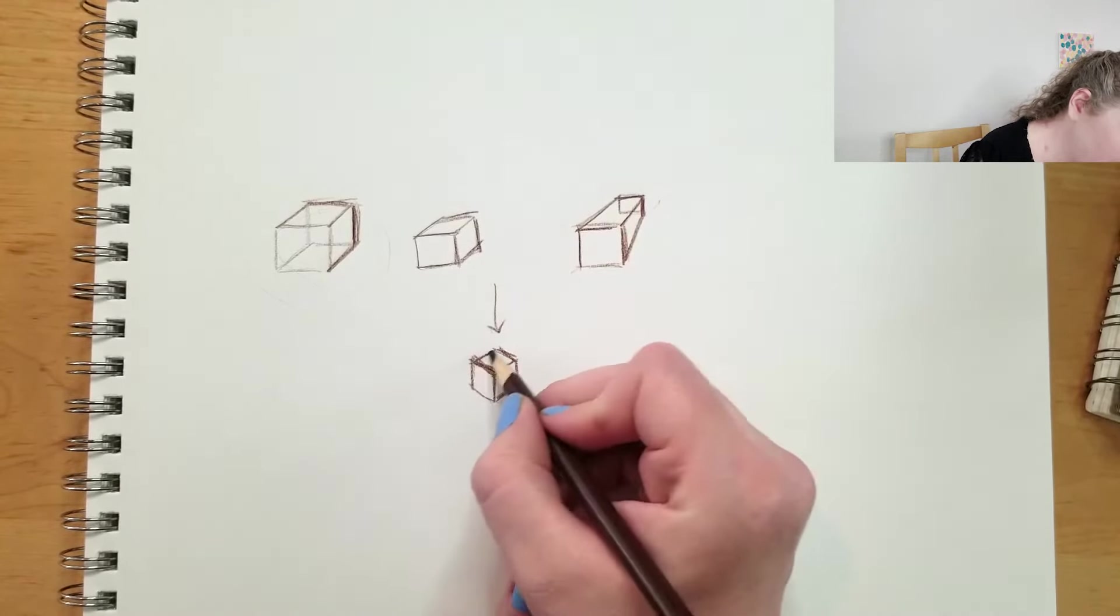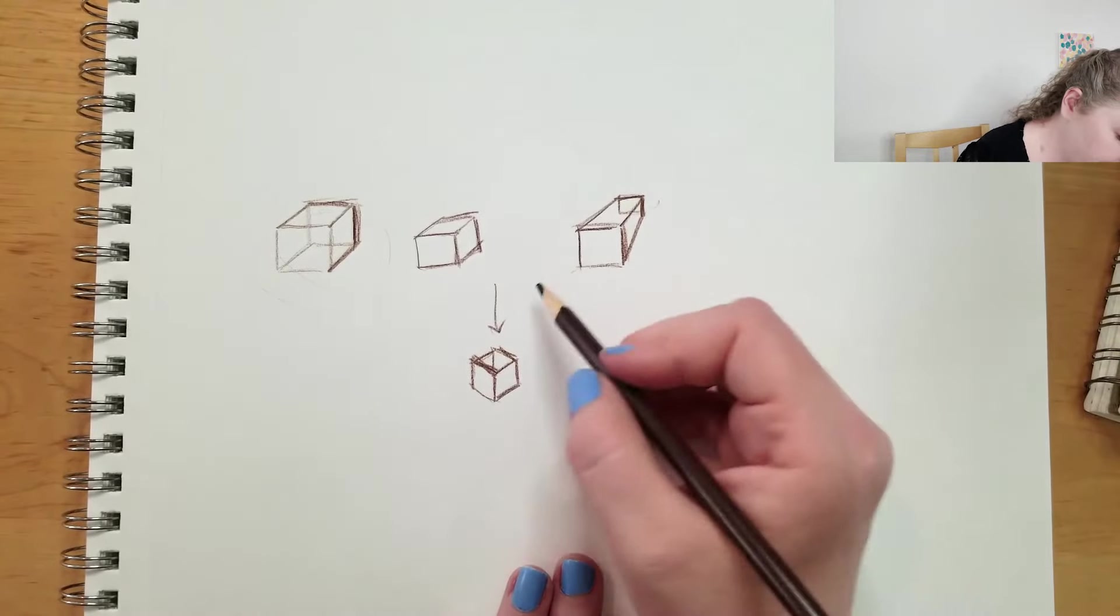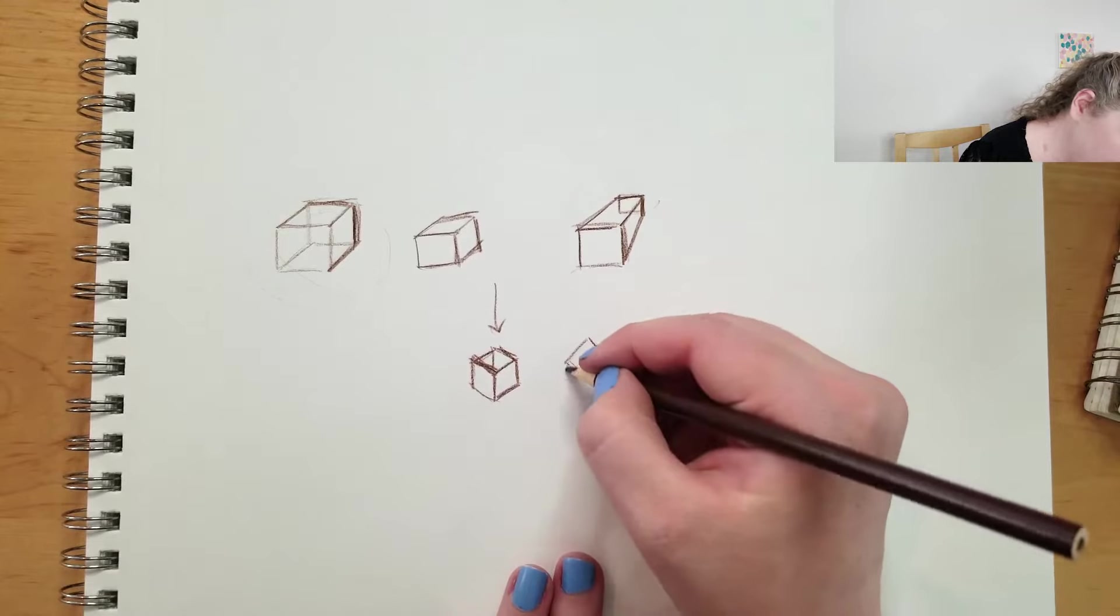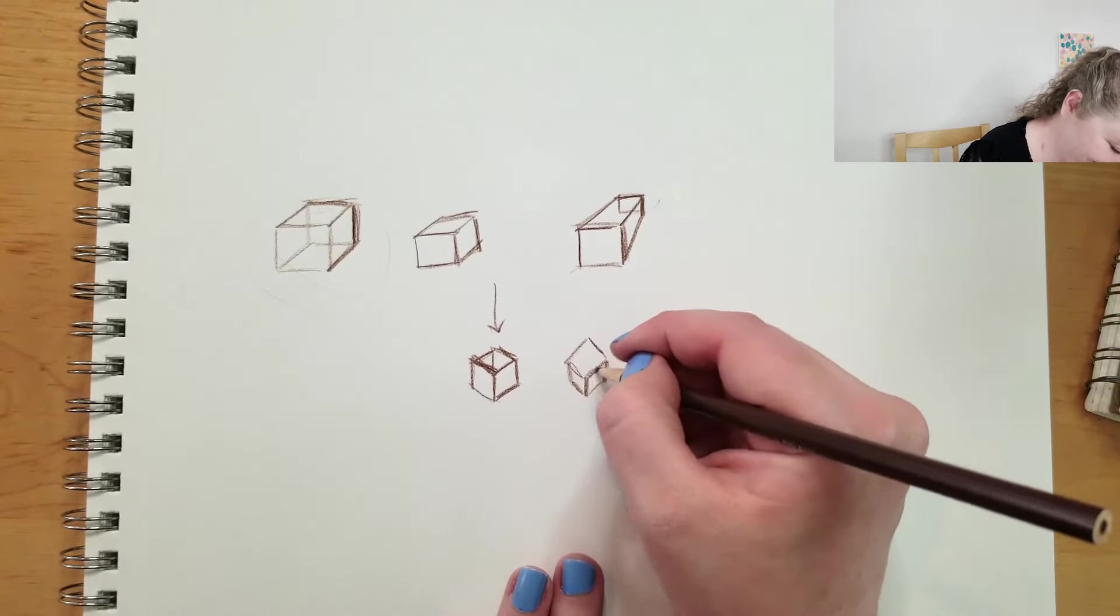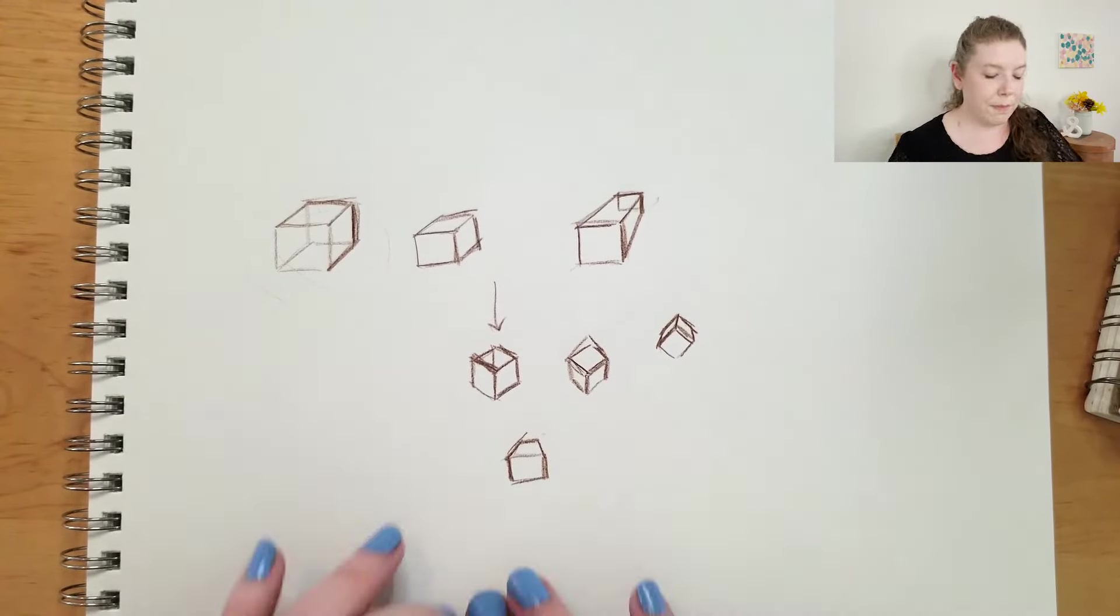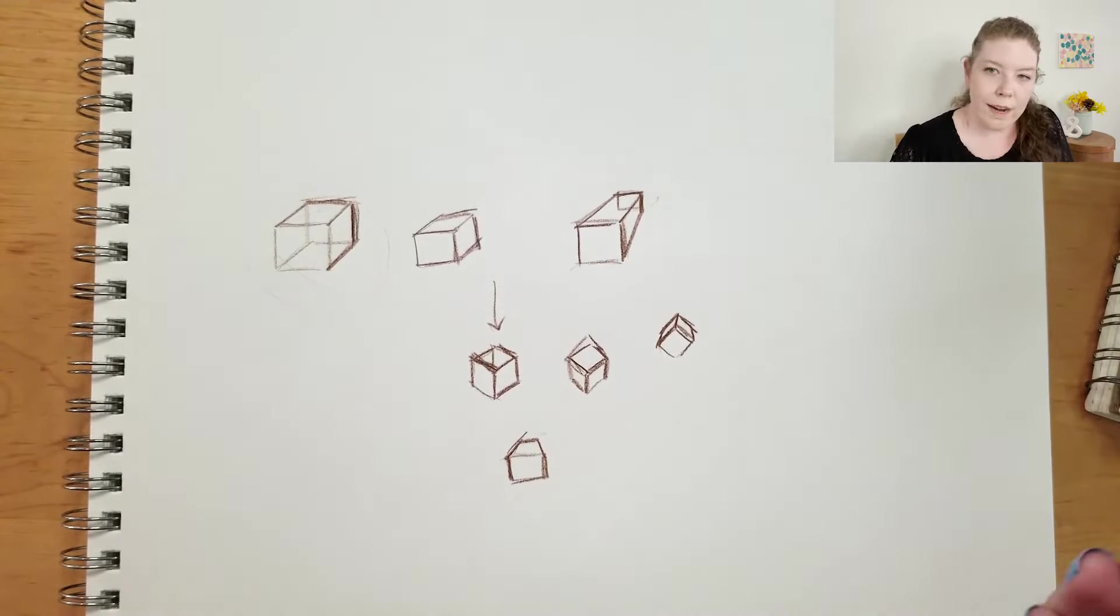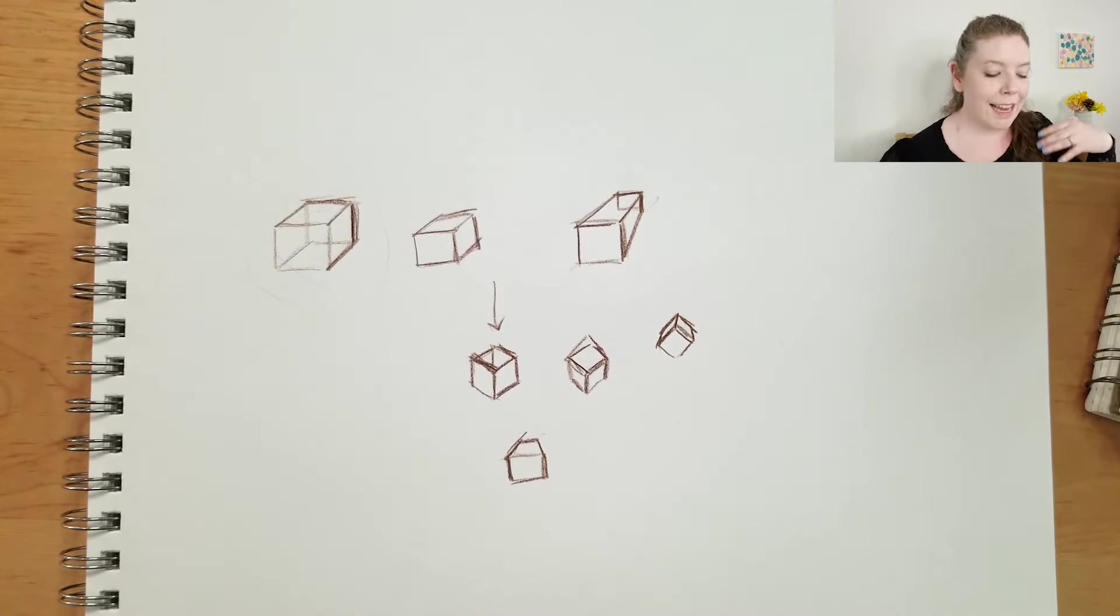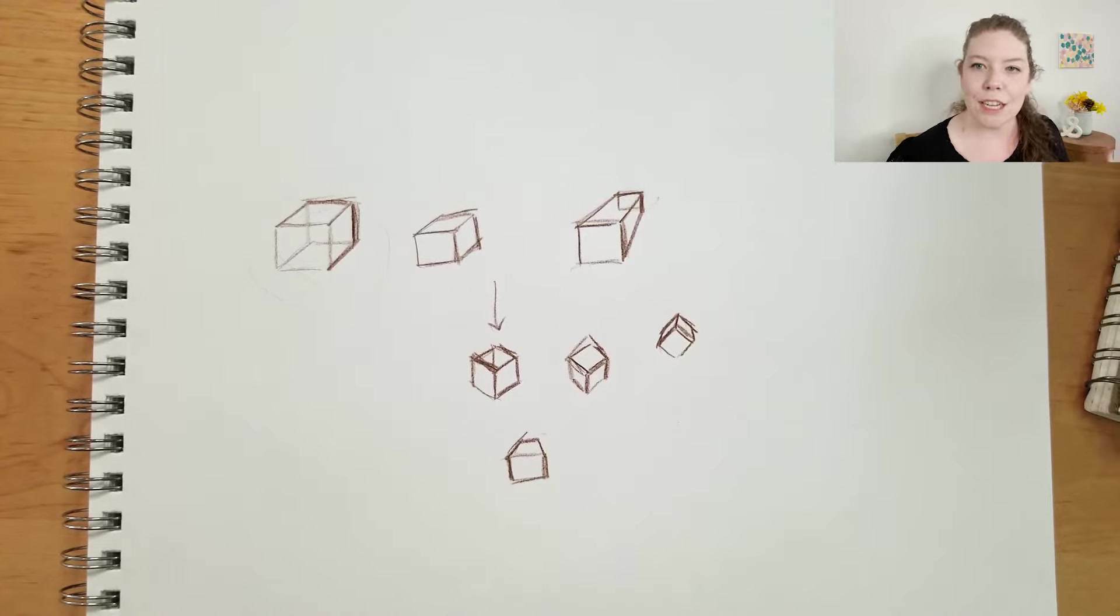I recommend just trying to draw cubes and practice drawing them and seeing how this looks. Like this now looks like I'm looking down on the box. Can I make it look like I'm looking up at the box? So basically for a beginner's perspective, I want you to just practice drawing squares at different angles and having them recede different amounts. And just playing with making these shapes over and over again before trying to align them to a vanishing point or to that horizon line. Just practice seeing if you can draw shapes dimensionally.